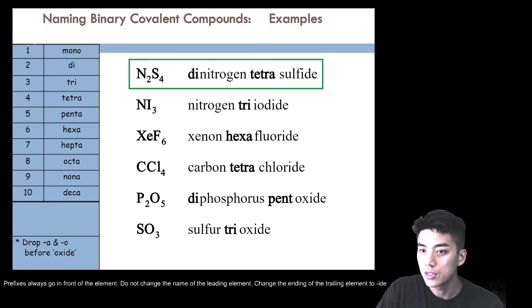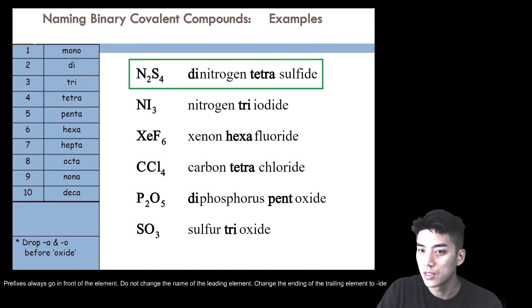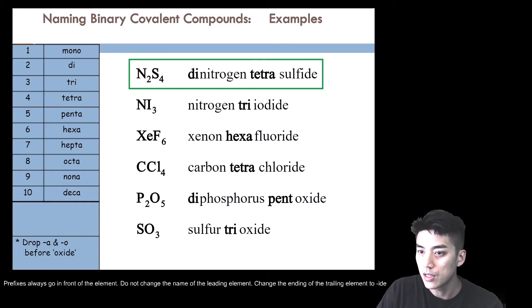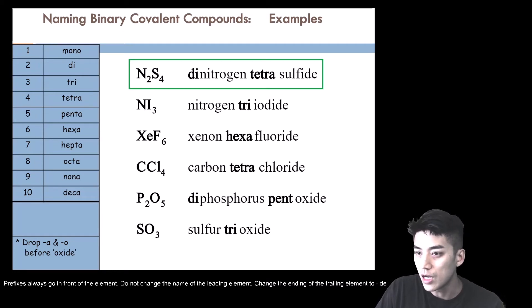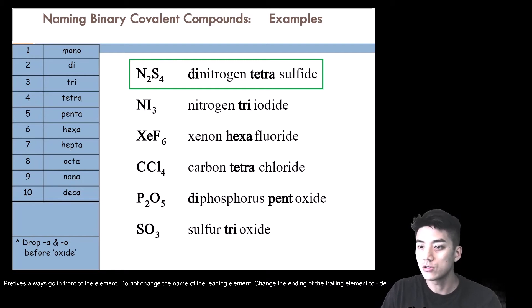So we know that there are two nitrogens and four sulfurs. Looking at the prefix chart, I will use 'di' which means two, and 'tetra' which means four. The prefixes always go in front of the element, so we call this dinitrogen tetrasulfide. The ending becomes -ide, sulfur becomes sulfide, giving us tetrasulfide — four sulfurs. So putting it all together: dinitrogen tetrasulfide. The formula NI₃ has no metals, so it follows covalent naming rules. We call this nitrogen triiodide. There is no need for 'mono' in front of the leading element if there is only one — you can omit the mono and just call it nitrogen triiodide.